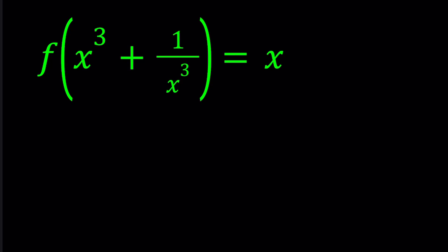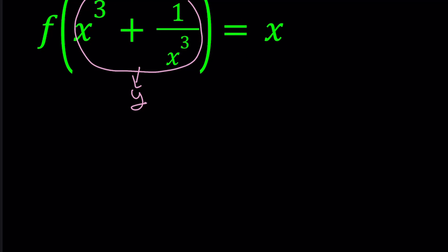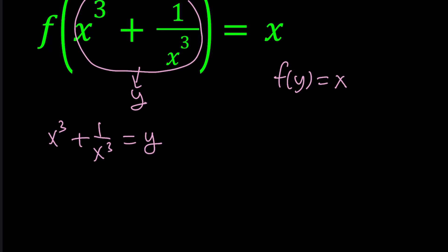Let's start by setting this whole thing equal to y. You can use a different variable if that's confusing, because a lot of times we use f of x as y, but in this case it's f of y equals x. Now that implies x cubed plus 1 over x cubed equals y.